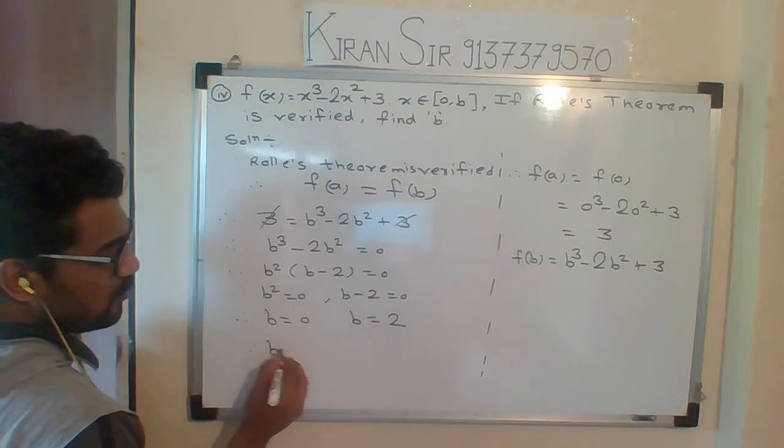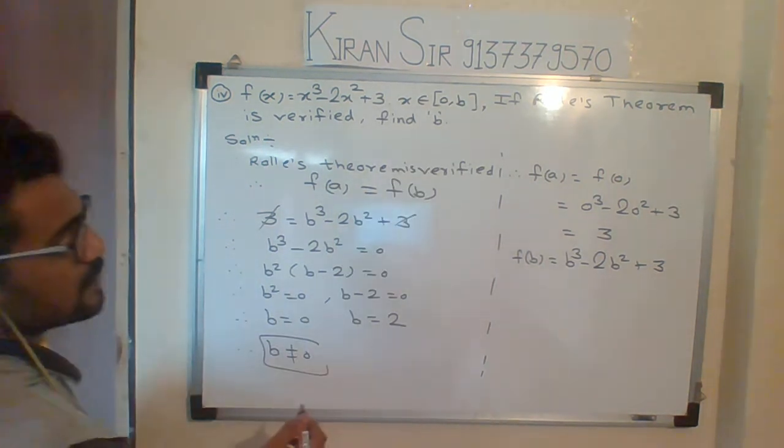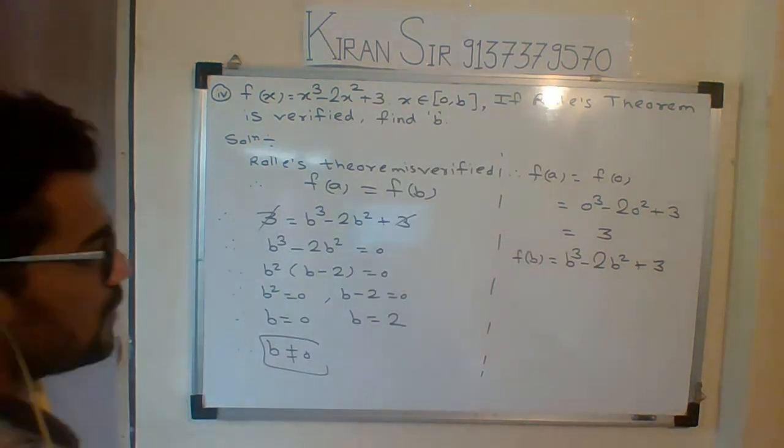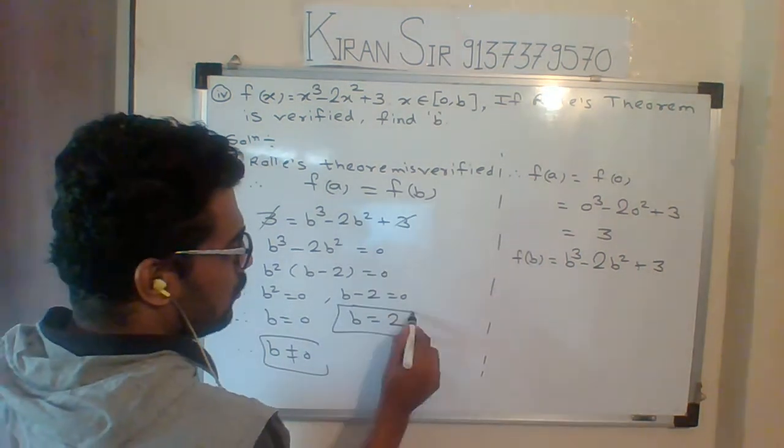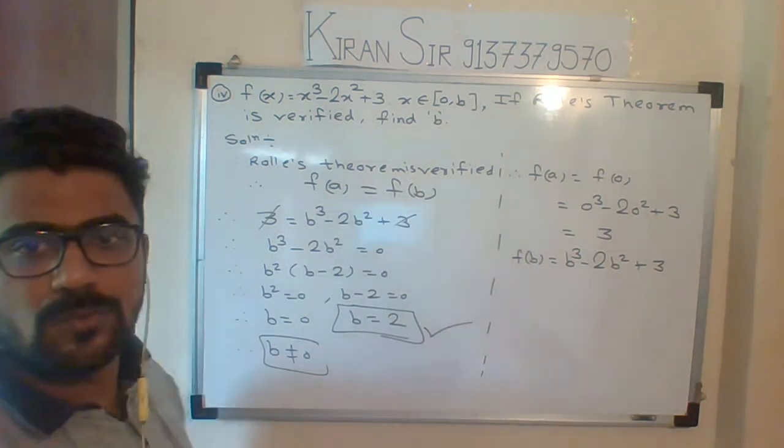But b cannot be 0. Why? Because already a value is 0. Some domain should be there. So what is the final value of b? Is 2.